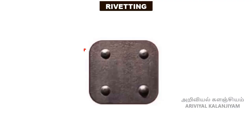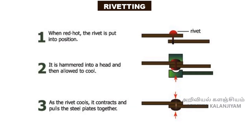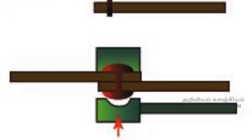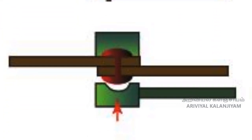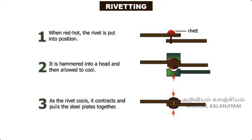Riveting. Rivets are used to join two steel plates together. A hot rivet is driven through the holes in the plates, and one end of the rivet is hammered to form a new rivet head. When cooled, the rivet contracts and holds the two plates tightly together.